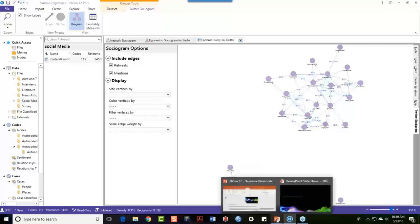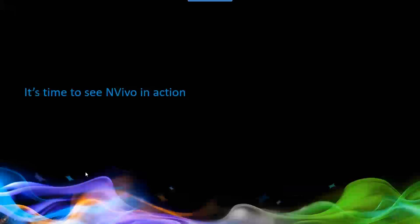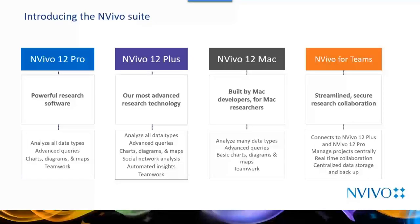Let me step out for a moment and go back to touch upon a few other points in the PowerPoint. Today we looked at NVivo Plus and in particular a lot of the automated features. NVivo Plus is a component of the NVivo suite, including NVivo Pro, NVivo for Mac, and NVivo for Teams — which connects NVivo 12 Plus and Pro to manage projects centrally with real-time collaboration, centralized data storage, and backup abilities. The basis of everything you do is the NVivo program itself.